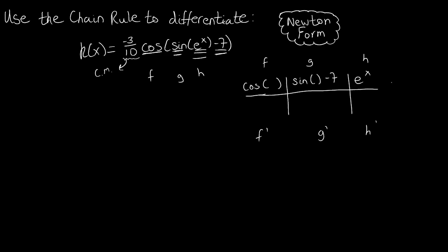Now that we have our functions listed, the next step is to take the derivative of each of these individually. The derivative of cosine is negative sine of whatever's inside. The derivative of sine of something minus 7, well, this minus 7 is a constant so it evaluates to be zero. So all you really need to worry about is what's the derivative of sine, and that's cosine. But then what's the derivative of e to the x? The derivative of e to the x is e to the x.